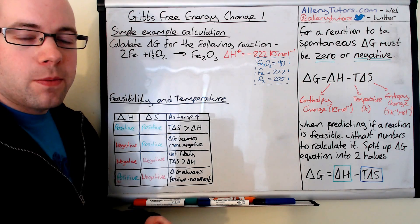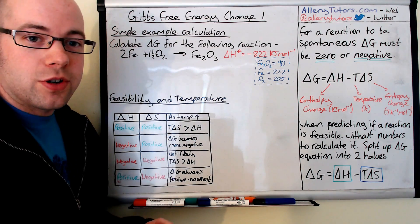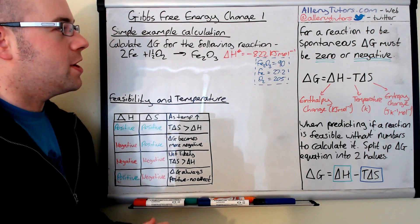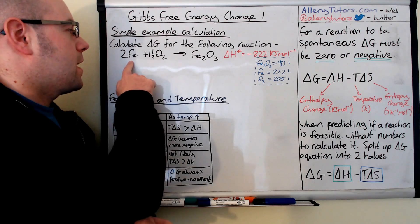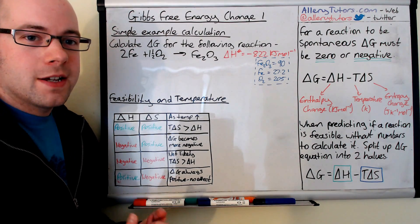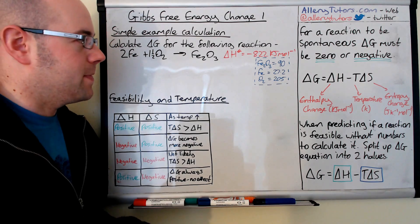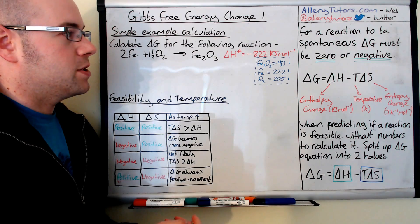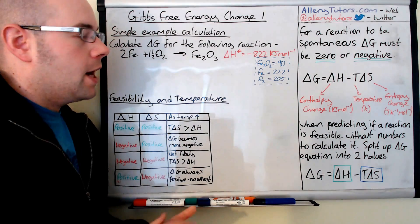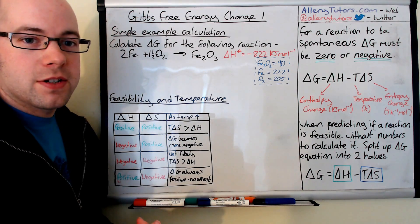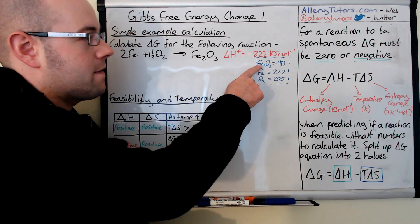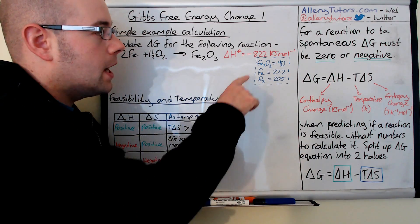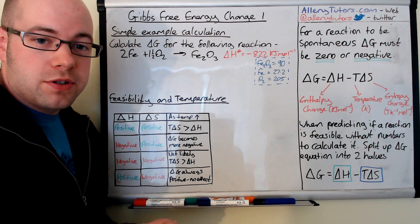We're going to go through a worked example using that equation to show how it works. We're going to calculate delta G for the following reaction: iron reacting with oxygen to form iron oxide, which is essentially a rusting process. We've been given the enthalpy change — it's very exothermic at minus 822 kilojoules per mole. In blue, we have entropy values: Fe₂O₃ is 90, iron is 27.2, and O₂ is 205 joules per Kelvin per mole.